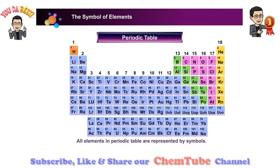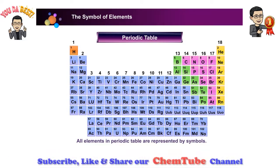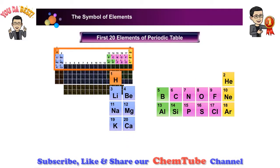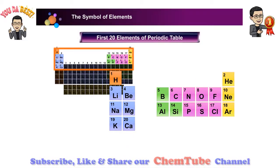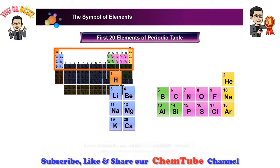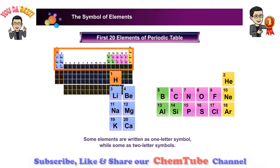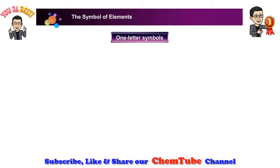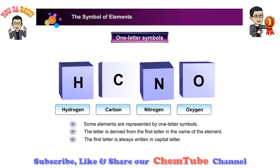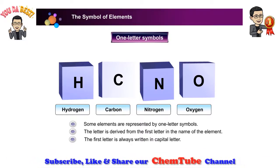Do you think this periodic table looks better when all the elements are written in symbols? Let us focus on the first 20 elements of the periodic table. From the 20 elements listed, some of them are represented by a symbol made up of two letters, while the rest are made up of one letter. Some elements are represented by one-letter symbols. The letter is derived from the first letter in the name of the element.